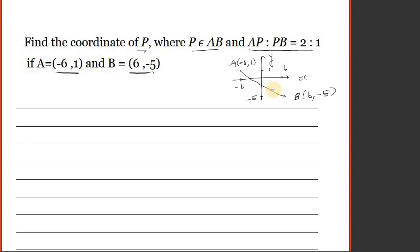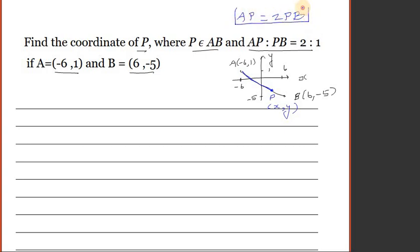So P is somewhere here, and let's say the coordinate of P is (x, y). What they're saying is the length AP — this basically means that AP is twice PB. The length of AP is double PB. This segment is 2 and this one is 1.